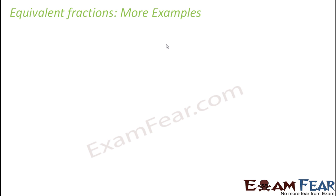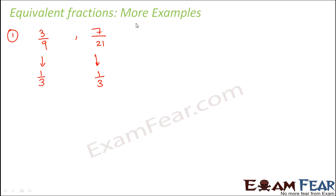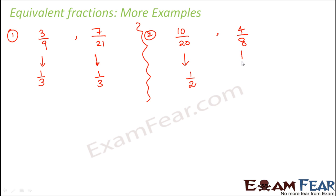Let us consider more examples. The first example is 3 by 9 and 7 by 21. So 3 by 9 corresponds to 1 by 3, and 7 by 21 also corresponds to 1 by 3, so this is an example of equivalent fractions. Similarly, 10 by 20 and 4 by 8 — even though they look very different, both represent 1 by 2. So they are again equivalent fractions.